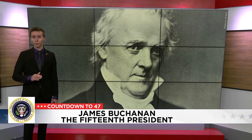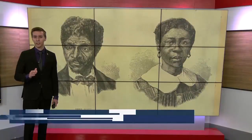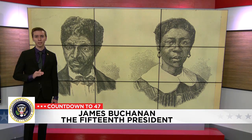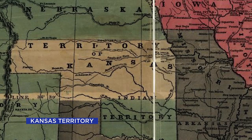Just two days after Buchanan took office, the United States Supreme Court handed down one of its most infamous rulings, the Dred Scott decision. The decision stated that enslaved people did not have any rights under the U.S. Constitution and that Congress had no right to ban slavery in federal territories. This decision pleased Southerners and incensed Northerners. Buchanan unwisely sought to remedy the tension by pushing for Kansas to become a slave state, which only angered Republicans and caused backlash from within his own party.